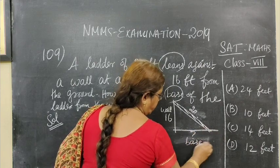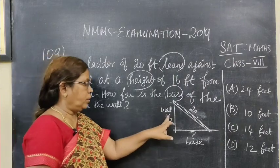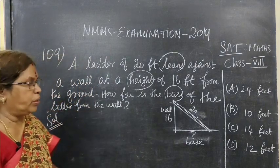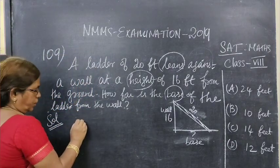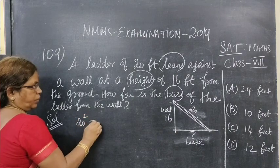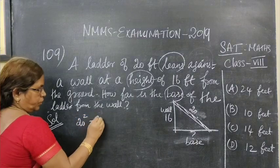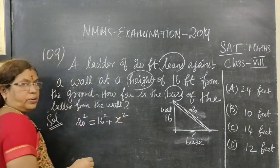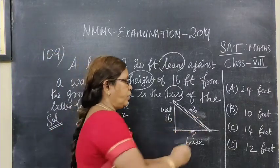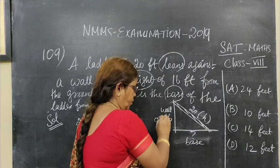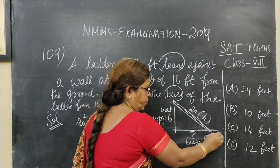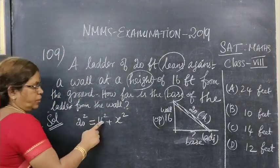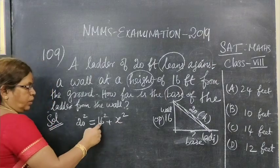This is the base. So the base is what we need to find. This is some x squared. This is Pythagoras theorem — hypotenuse squared equal to opposite side squared plus adjacent side squared. So in the formula, this is the hypotenuse, then this is opposite and this is adjacent. So this is the base.